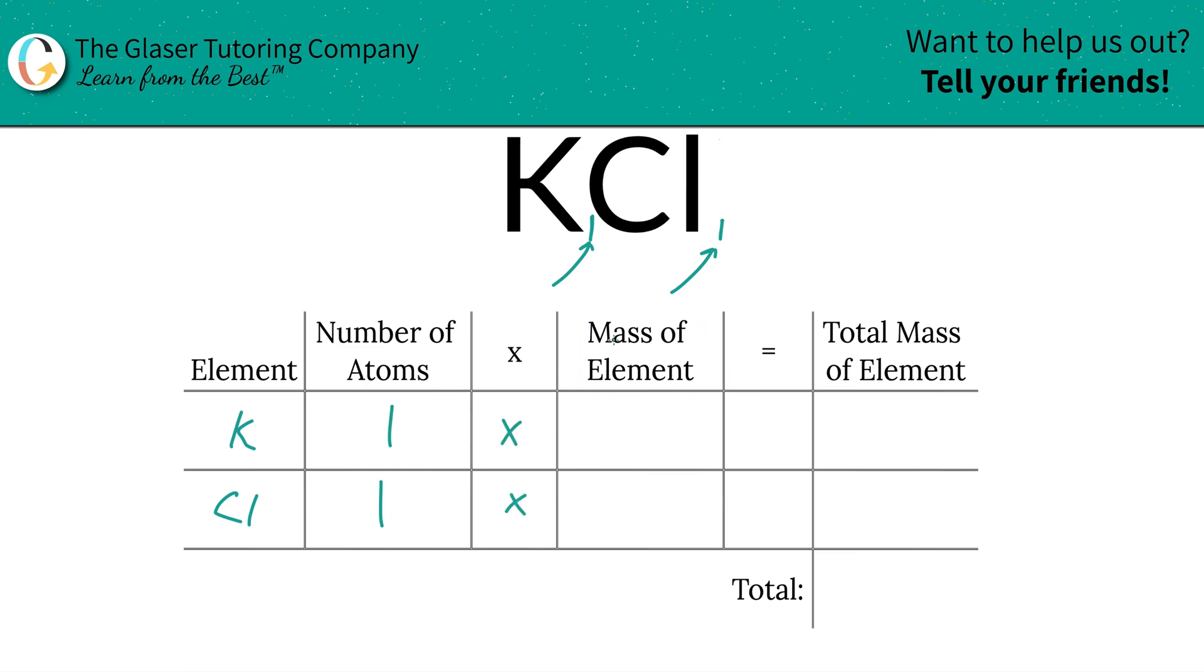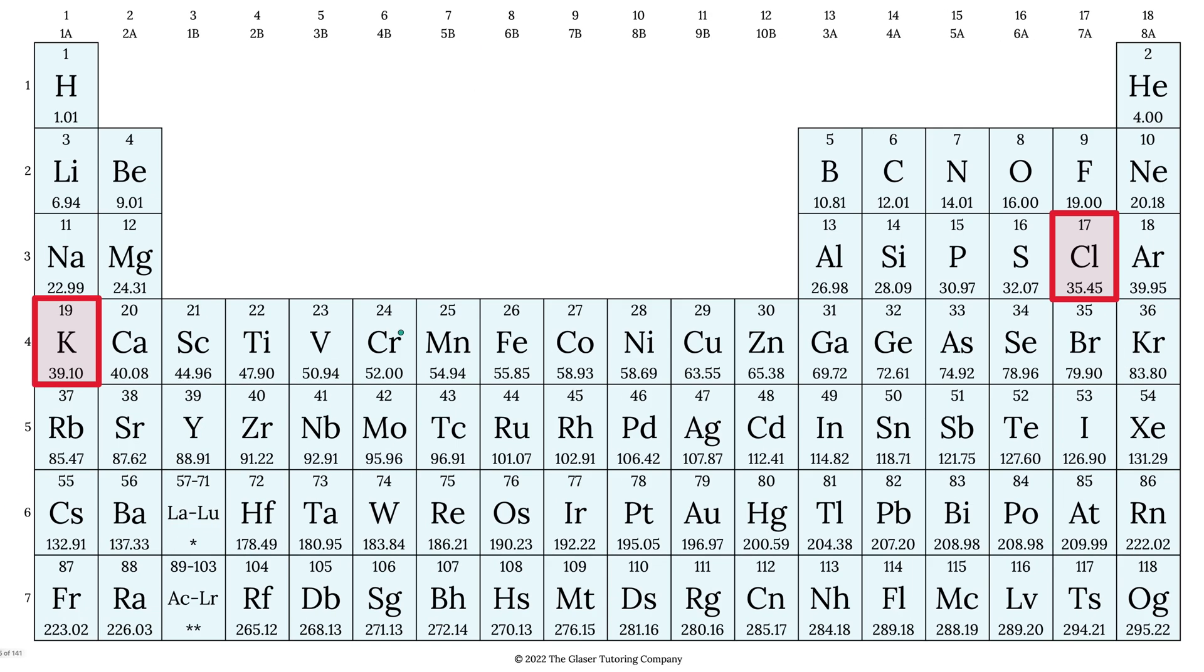Then we're going to multiply those numbers by the mass of each particular element and those masses are found on the table. So let's take a look. What table, by the way? Not the table right in front of you, but this table right here in front of you is going to be the periodic table.